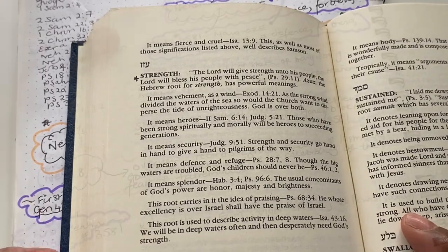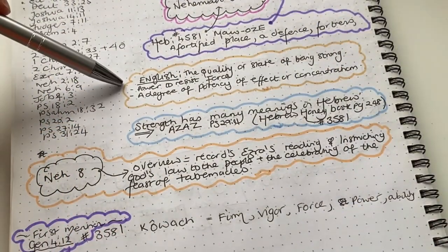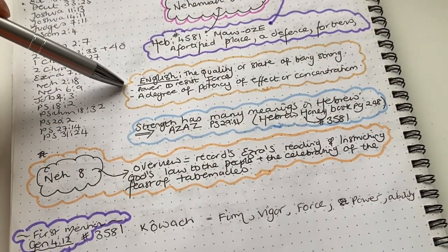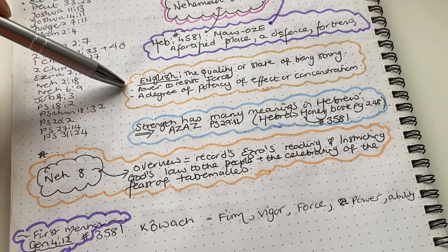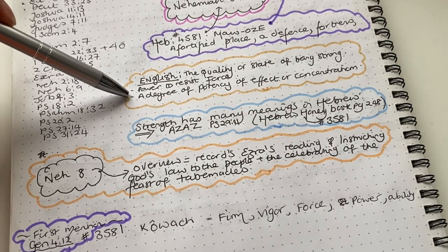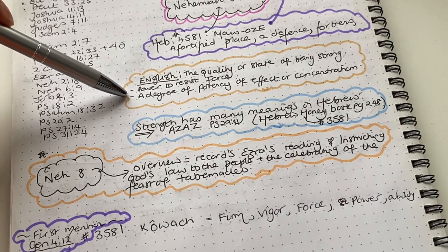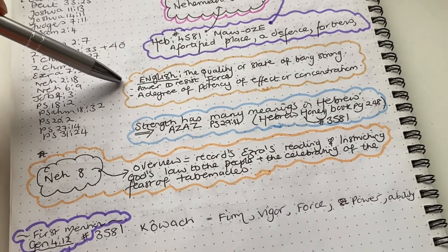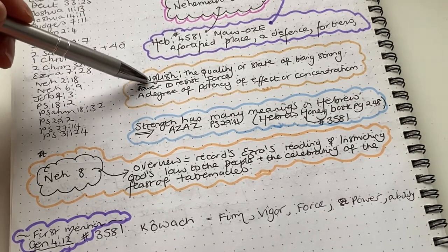So that's strength there. In the English Dictionary, strength means the quality or state of being strong, power to resist a force, a degree of potency of effect or concentration. So it's the quality or state of being strong. That's what it means in the English. That's what the word strength means in the English.